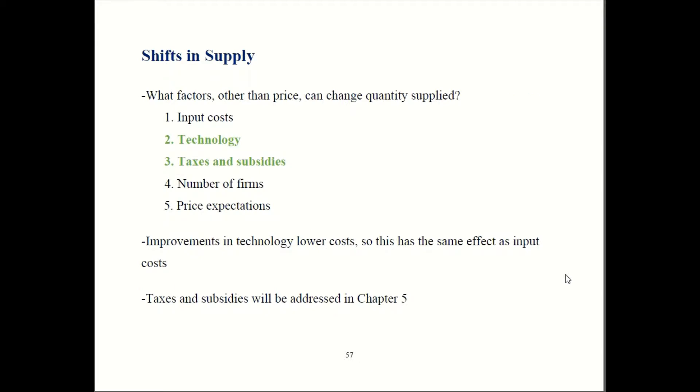So that's how input costs work. For technology, it's very, very similar. It's so similar that I actually won't go through a separate example. When technology gets better, it lowers your input costs. So if you do things on a computer instead of doing it all by hand, that's going to save you a lot of time and effort on labor so you can cut back on labor. So that's reducing one of your input costs. So technology getting better and input costs going down look exactly the same.